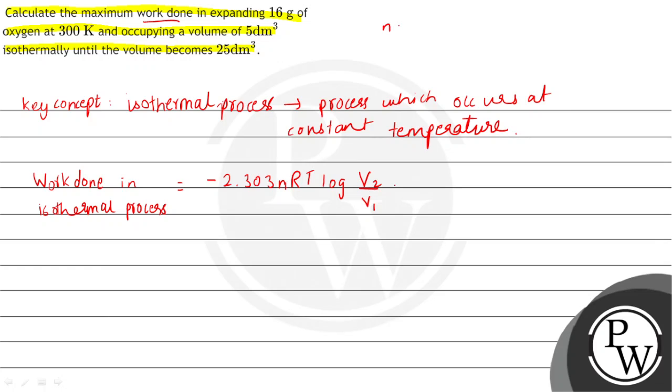We have to get N. Number of moles is equal to given mass upon molecular mass which is equal to given mass is 16 upon oxygen's mass is 32 which is equal to 1 by 2.